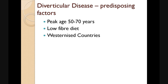What predisposes people to developing diverticular disease? The peak age of presentation is between 50 and 70 years, but diverticular disease is a progressive disease that usually occurs from a younger age and is identified later on when the complications and symptoms arise. We know there is an association with low-fibre diets. Furthermore, in westernised countries, we observe a higher incidence of disease.